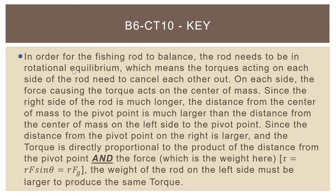Why is it the key? On each side, the force causing the torque needs to act on the center of mass, and the torques ultimately need to cancel. Since the right side of the rod is much longer, the distance from the center of mass to the pivot point is much larger on the right side than the distance from the center of mass on the left side to the pivot point. The pivot point is where her finger was — where that dashed line was. Since the torque is directly proportional to the product of the distance from the pivot point and the force, the weight of the rod on the left side must be larger to produce the same torque.